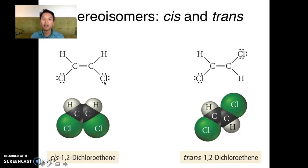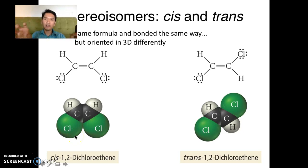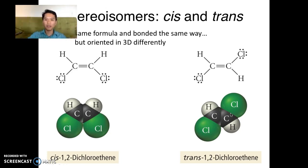These are called stereoisomers — same formula, bonded in the same way, but with a different 3D orientation. The way we name them is by looking at the bulky groups, or in this case the same groups. Since these two chlorines are on the same face, we say they are 'cis.' The other molecule has the two chlorines on opposite faces, so we call that 'trans' — just like the transatlantic railroad, connecting opposite ends. This is the trans isomer and this is the cis isomer.